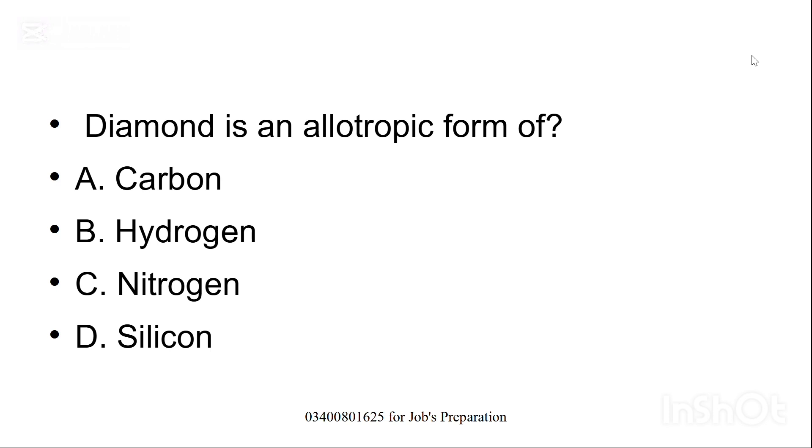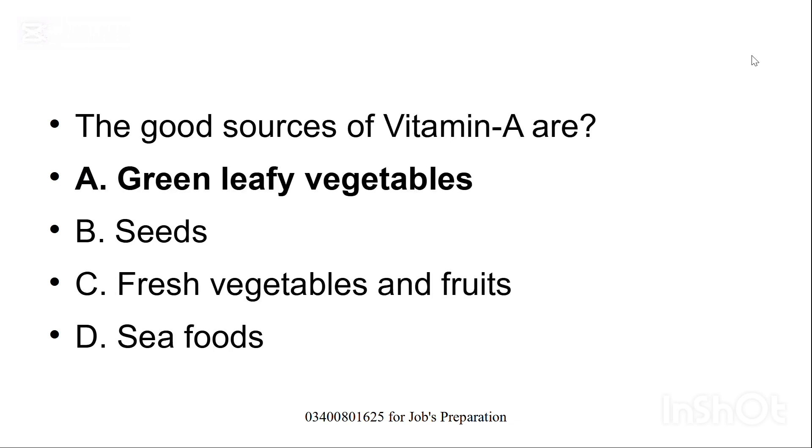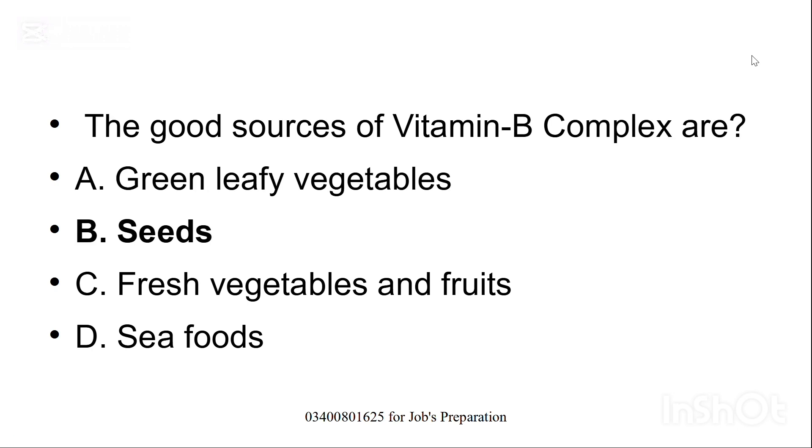Diamond is an allotropic form of, option A: carbon, B: hydrogen, C: nitrogen, D: silicon. What is the correct option? Please tell me in comment section. The SI unit of heat is, option C, joule is the correct option. The good source of vitamin A are green leafy vegetables. The good source of vitamin B complex are seeds. Option B is the correct option.